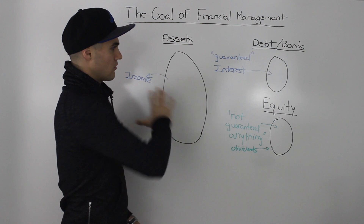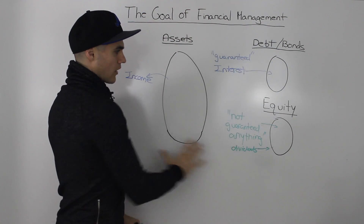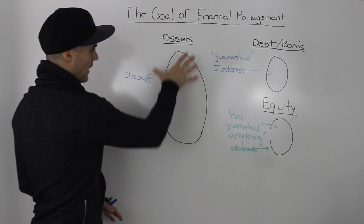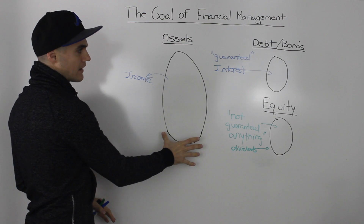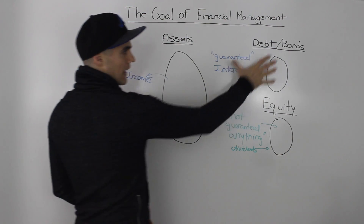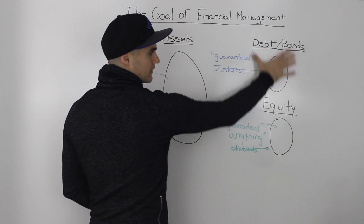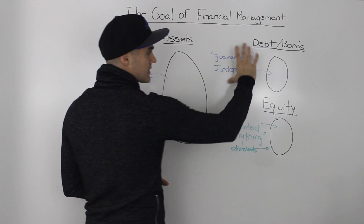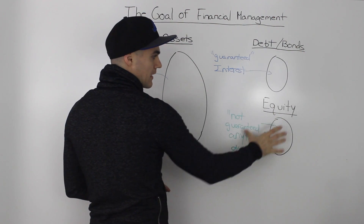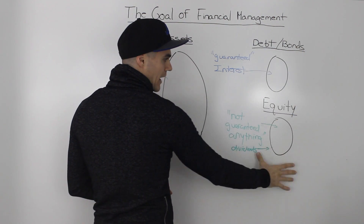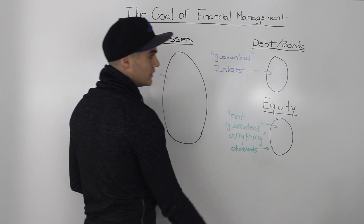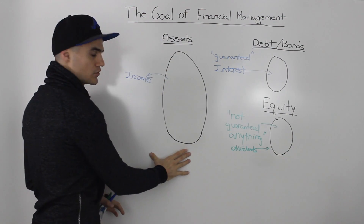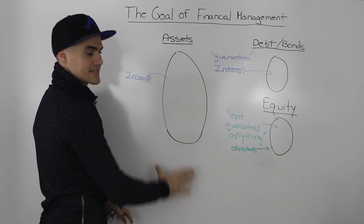Notice how this diagram represents a balance sheet. You have your assets on the left side, and then you have your debt — or liabilities as they call it on a balance sheet — on the right side. And then you have your equity on the right side as well. So your debt plus your equity has to equal your assets.